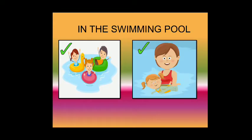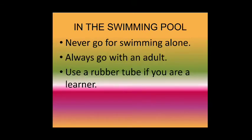In the swimming pool, we should always use a rubber tube if you are a learner. Go to the swimming pool with an adult. Never go alone to the swimming pool. Let's revise — never go swimming alone, always go with an adult, and use a rubber tube if you are a learner. We should always follow these safety rules in the swimming pool.